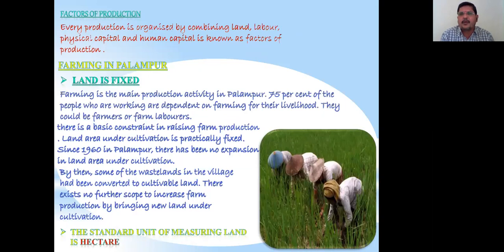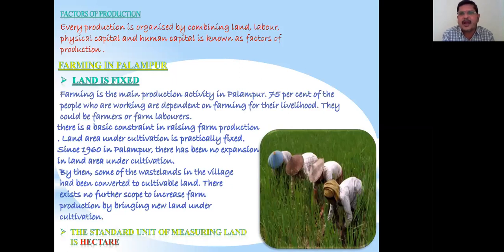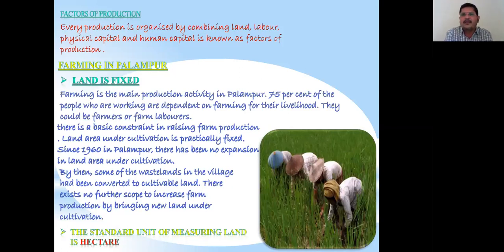Every production is organized by combining land, labor, physical capital, and human capital — these are known as the factors of production. Farming is the main production activity in Palampur. Seventy-five percent of the working people depend on farming for their livelihood — they could be farmers or farm laborers. There is a basic constraint in raising farm production.